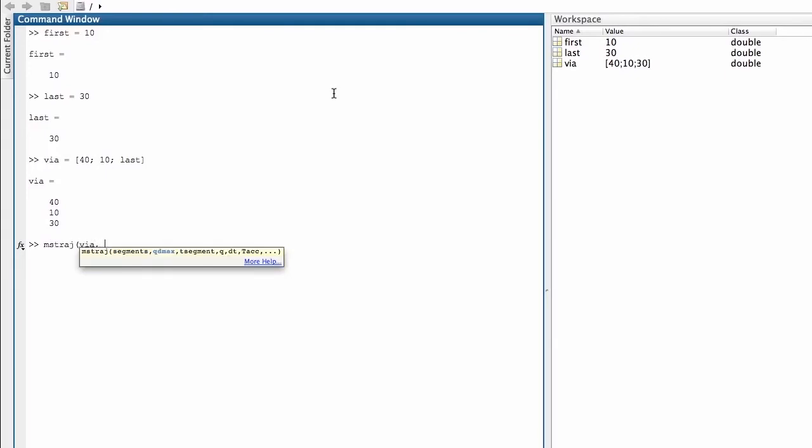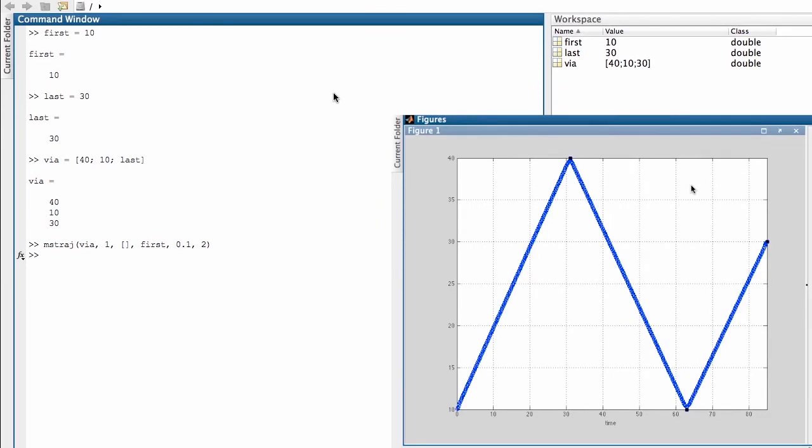The next argument is the velocity at which we move and it's going to be one unit per second. The third argument I'm going to set to null for the time being and I'm going to put in the first location that we want to visit. I'm going to put in the time interval and I'm going to put in the acceleration time. And here's our trajectory. We've gone from 10 up to 40, back down to 10 and up to 30.